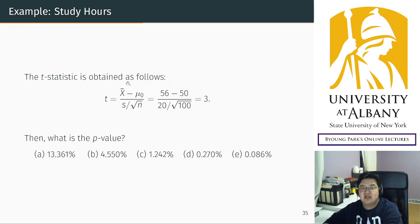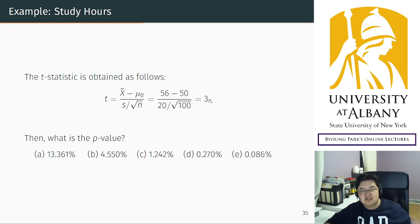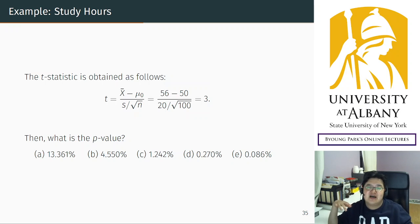The t-statistic is calculated this way: the data says 56 hours, I believe 50 hours, and we standardize using the central limit theorem's parameter — the standard deviation of a single outcome over square root of sample size. So we get 3. This is the standardized difference between data and belief.